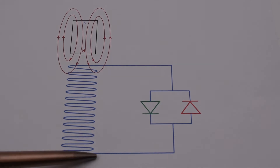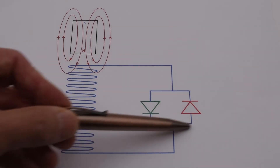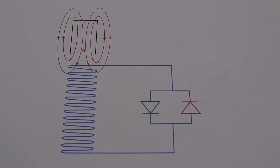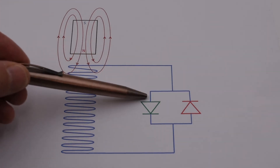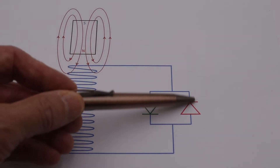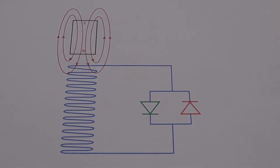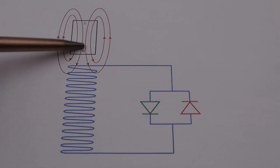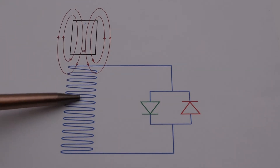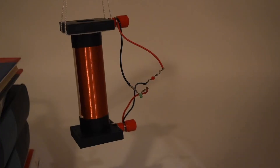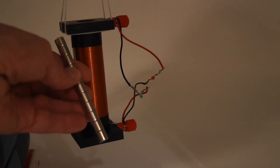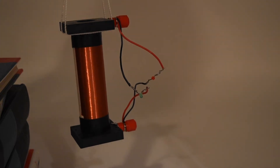The LEDs are attached such that if the green LED is forward biased, the red LED is going to be reverse biased. We're going to take a magnet and drop it through the coil — I have a magnet that I'm going to drop down the center of the coil.